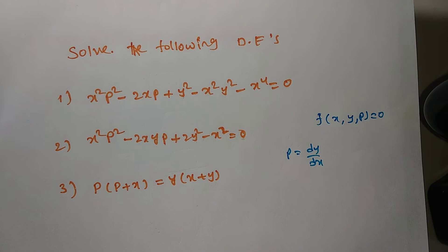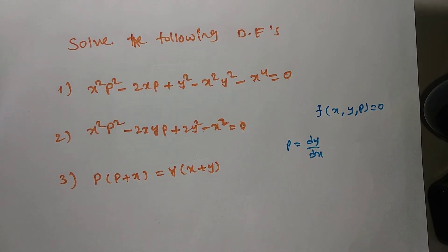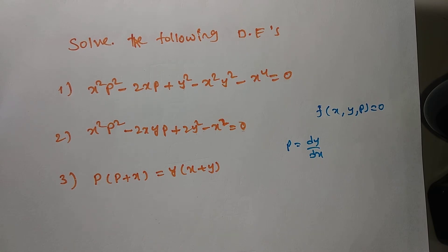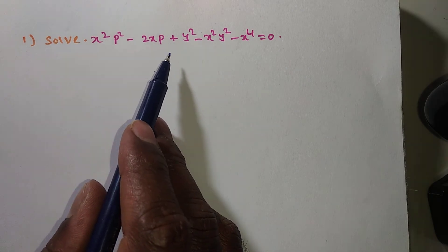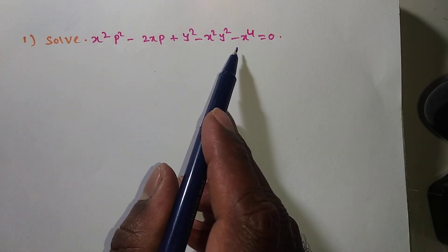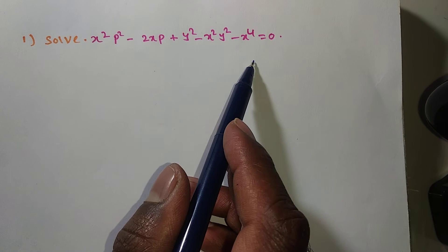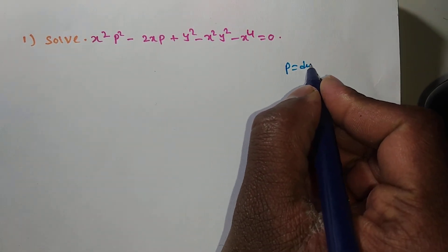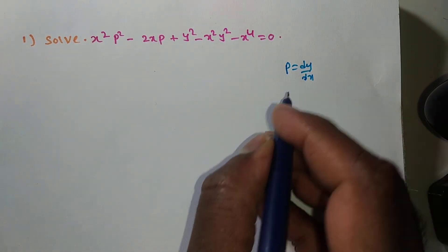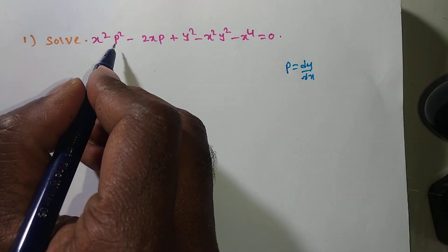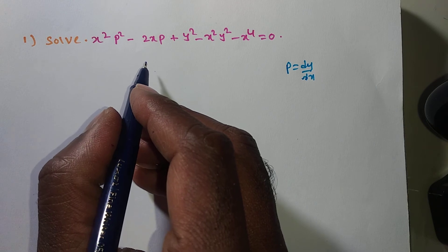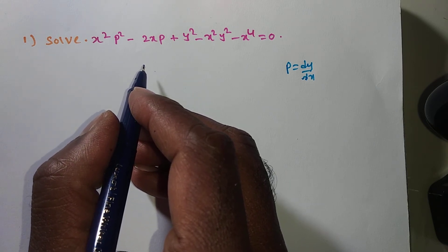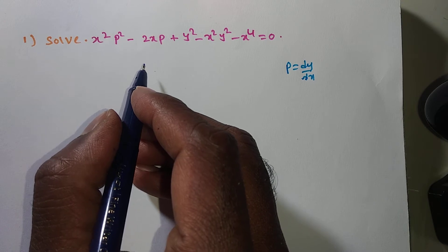After watching this video please comment in the comment box and subscribe. Now I am going to solve these problems. The first problem is x²p² - 2xp + y² - x²y² - x⁴ = 0, where p = dy/dx. This is first order but not first degree. We go for solvable for p; if not possible, we try solvable for x or solvable for y.